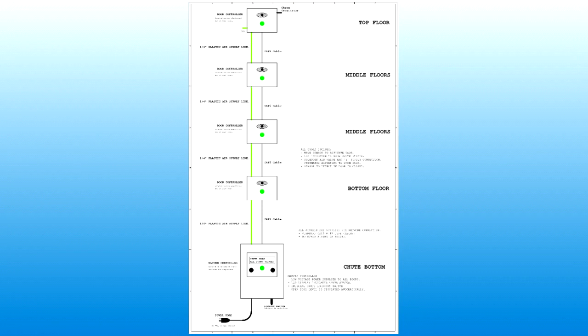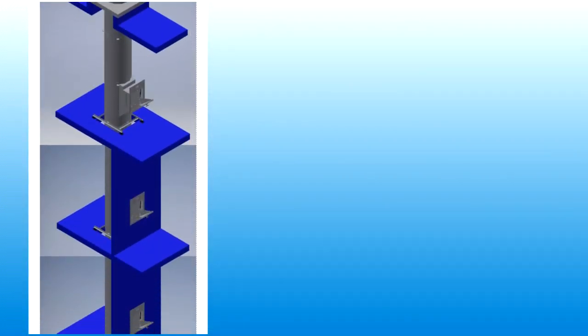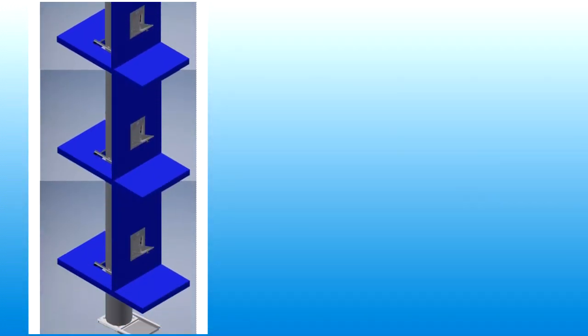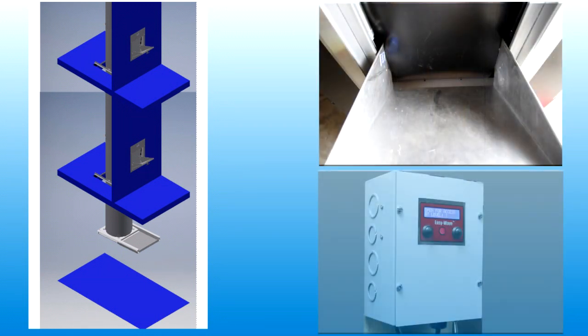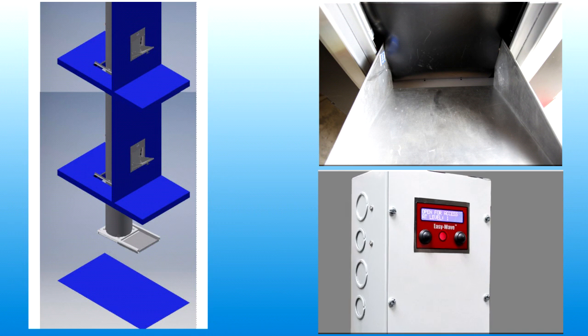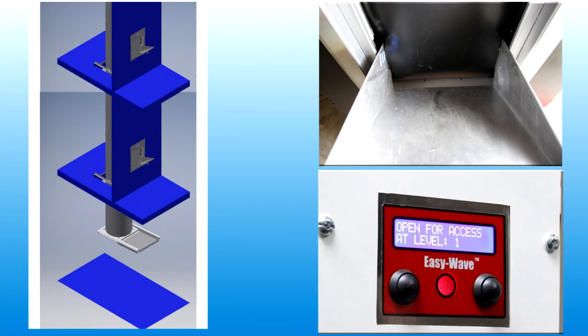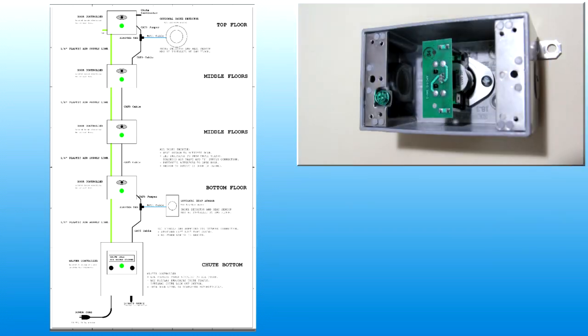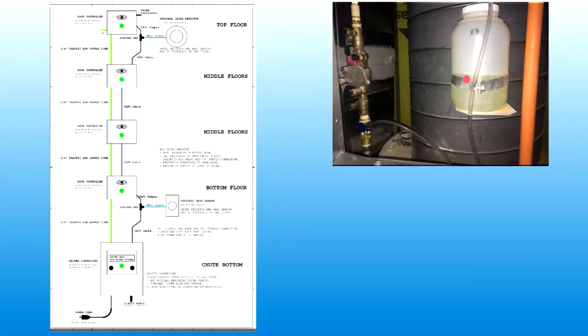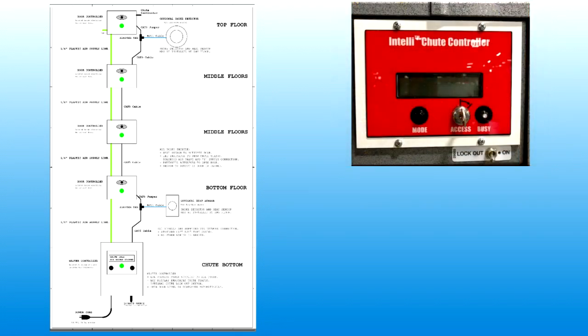Normally, the main components of the chute will be the chamber that passes down through the building, intake doors at each of the upper levels, and a control system used to interface between upper level doors and material handling equipment at the base of the chute. Many chute systems will also include optional equipment such as smoke detectors, heat sensors, wash down systems, and other auxiliary equipment as determined by specific site installation requirements.